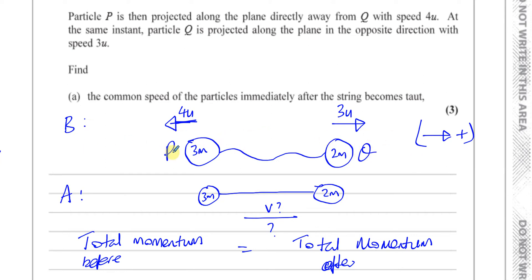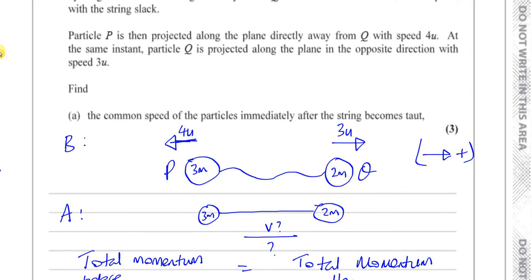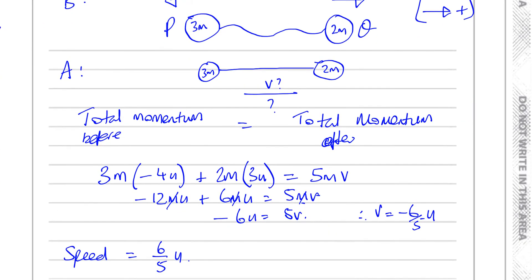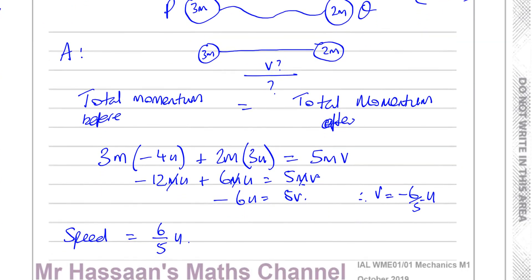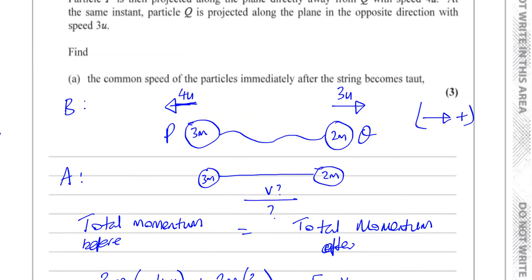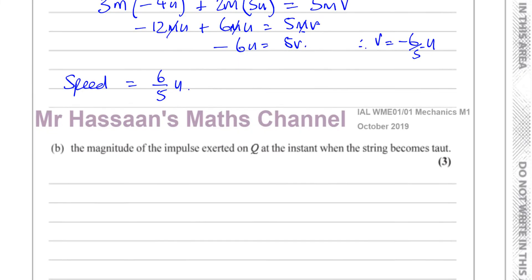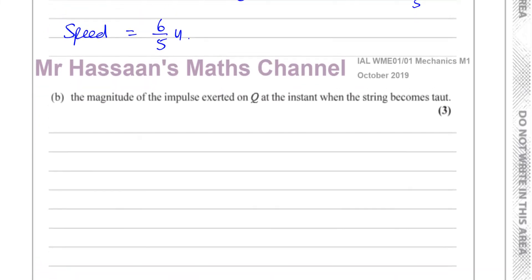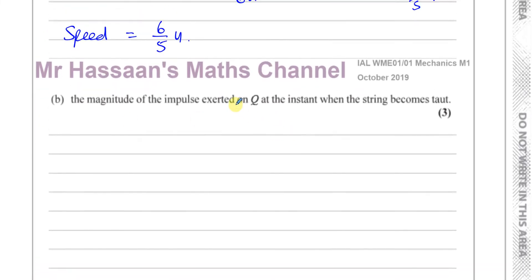So I would say here, if they asked for the direction, the speed is 6/5 u in the direction that P was projected initially. Whether we drew P on the right or the left, it won't make any difference — we'll still have the correct explanation. So that's the answer for question number one part a. Now for part b, it says: find the magnitude of the impulse exerted on Q at the instant when the string becomes taut.